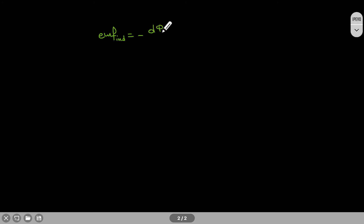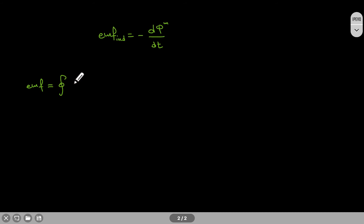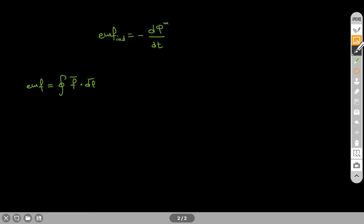As I said, the induced EMF is minus dΦ (the magnetic flux) over the change in time. Now, we saw at the beginning of the chapter where we started talking about electrodynamics — the EMF by definition is a closed path integral of the force per unit charge dot dl. This force is a force per unit charge.